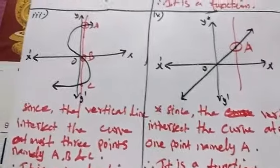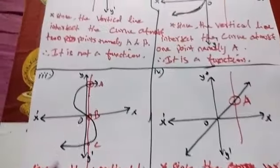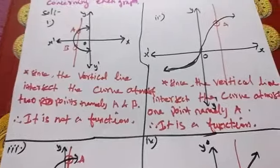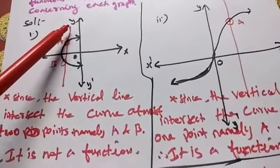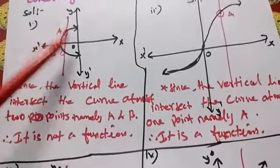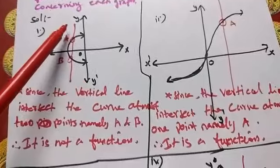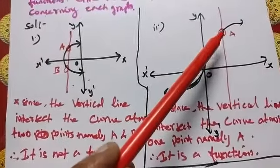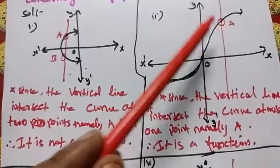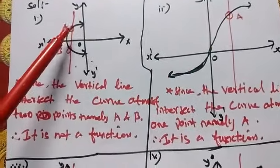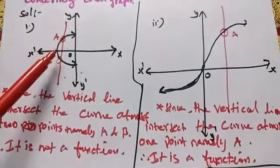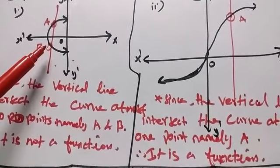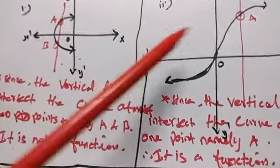So the vertical line test is used. You can put the function inside the function. You can see that if the vertical line intersects more than one point, it is not a function.